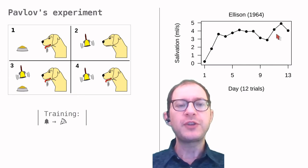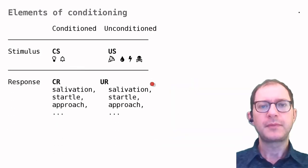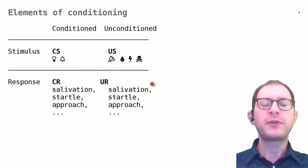Now, let's revisit what Pavlov did in more general terms. Every Pavlovian conditioning experiment can be described using four elements. Two are stimuli, and two are responses. They are called unconditioned or conditioned. Let's see what this means.